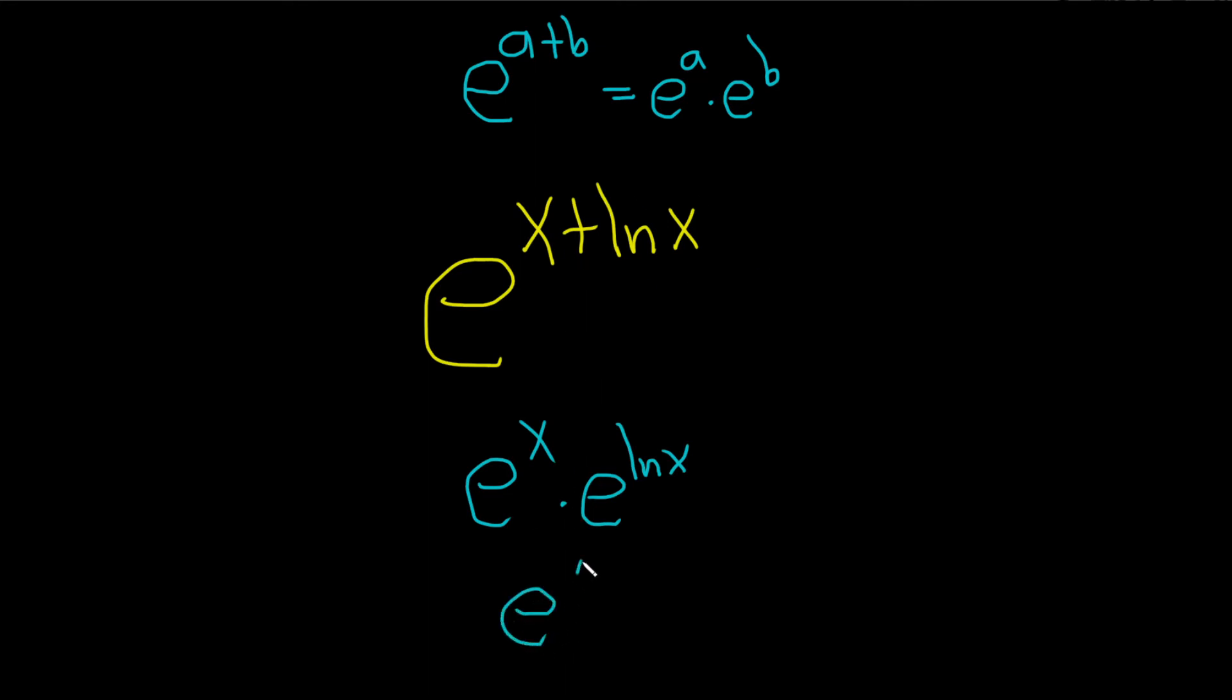So e to the x is just e to the x. We can't really do anything with that, but this is a special formula. This just gives you x, right? E and ln cancel.